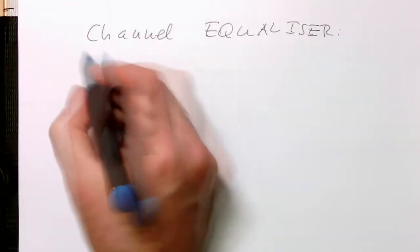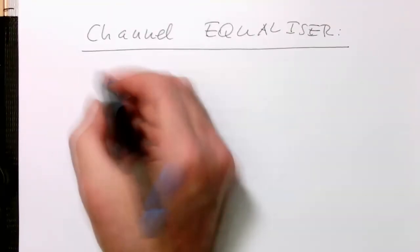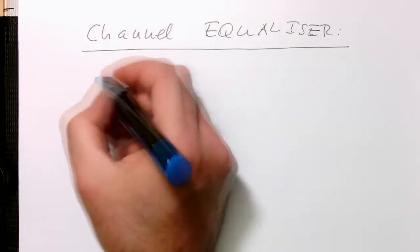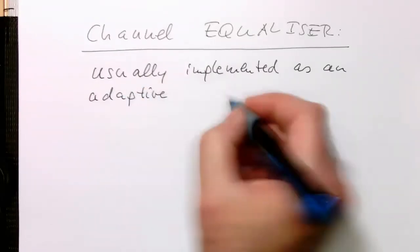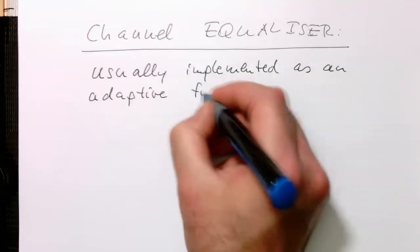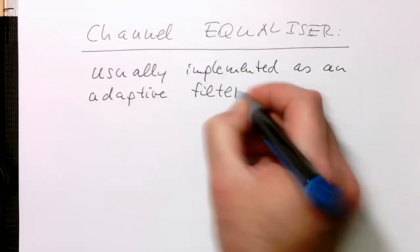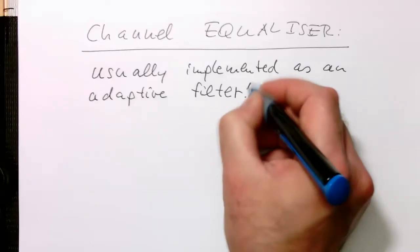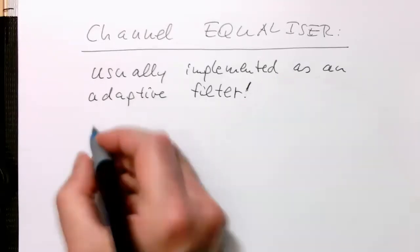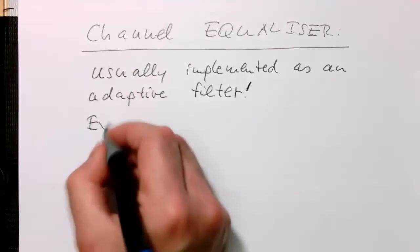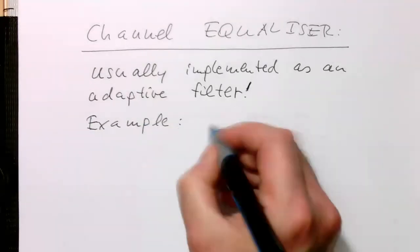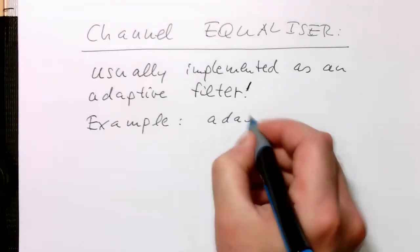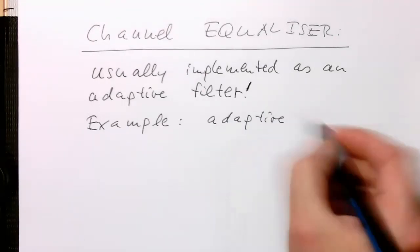So channel equalizer is usually implemented as an adaptive circuit, adaptive filter. And this filter, we use here as an example, an adaptive FIR filter.